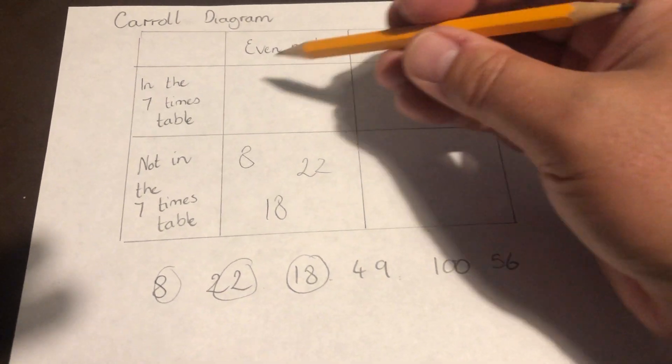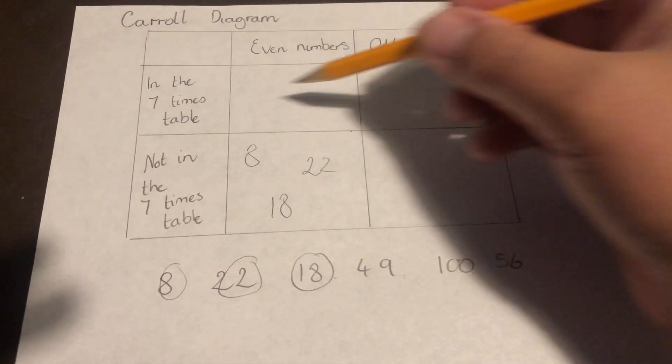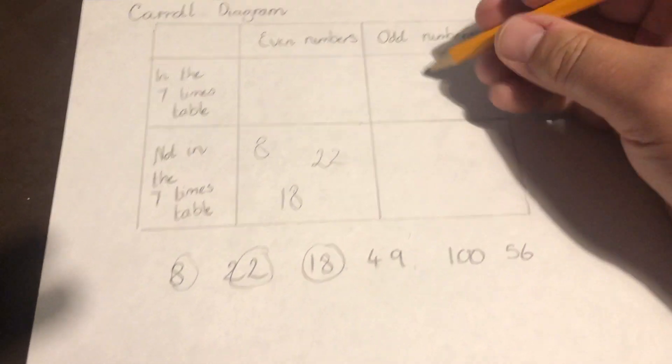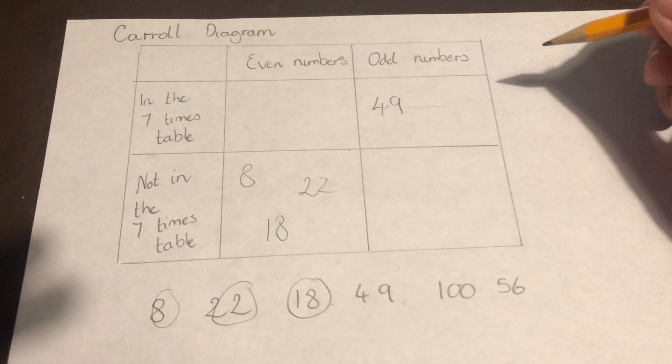49 is in the seven times table, so it's going to go in this row, and it is an odd number. So 49 is going to sit there.